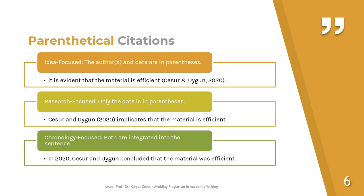There are three types of parenthetical citations. The first is idea-focused: the author and the date are in parentheses at a suitable place in or at the end of the sentence — for example, (Cesur & Uygun, 2020). The second is research-focused: only the date is in parentheses, and the focus is on the research. The third is chronology-focused: both the author and the date are integrated into the sentence — for example, 'In 2020, Cesur and Uygun found that...'